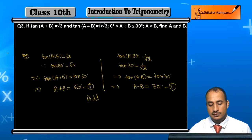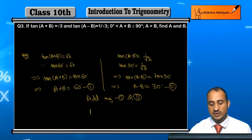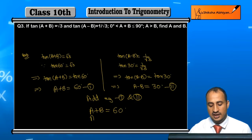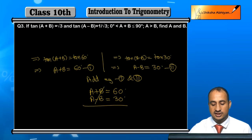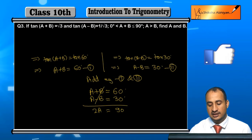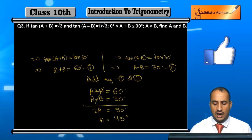Now add equations 1 and 2. Here A + B = 60° and A - B = 30°. Adding them, the B terms cancel out, giving 2A = 90°, so A = 90/2 = 45°.